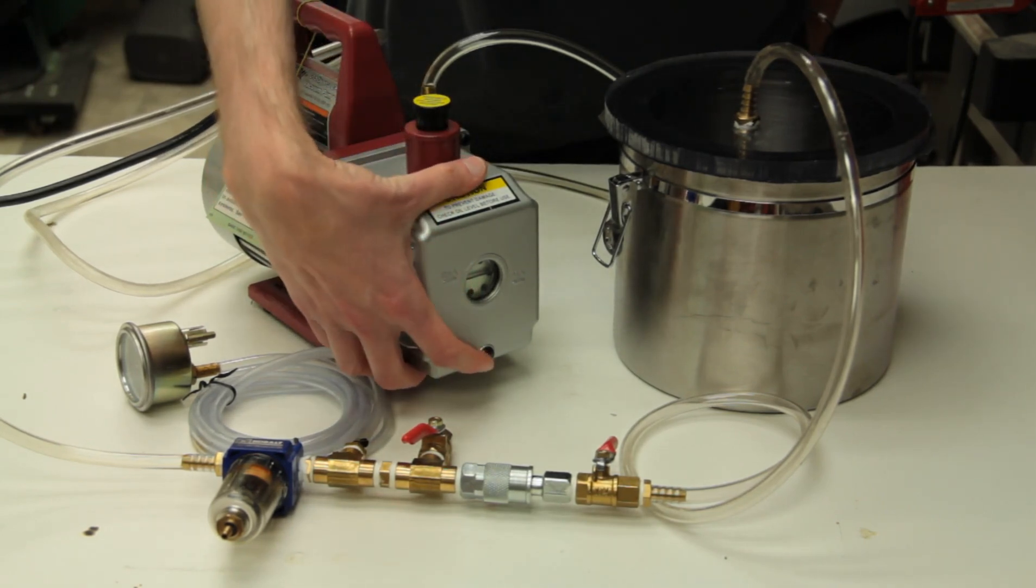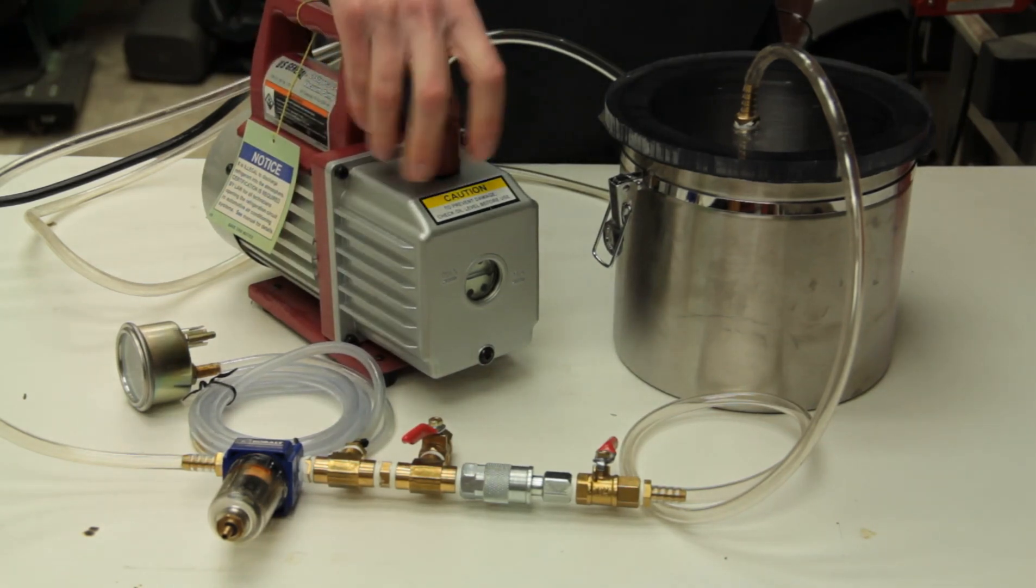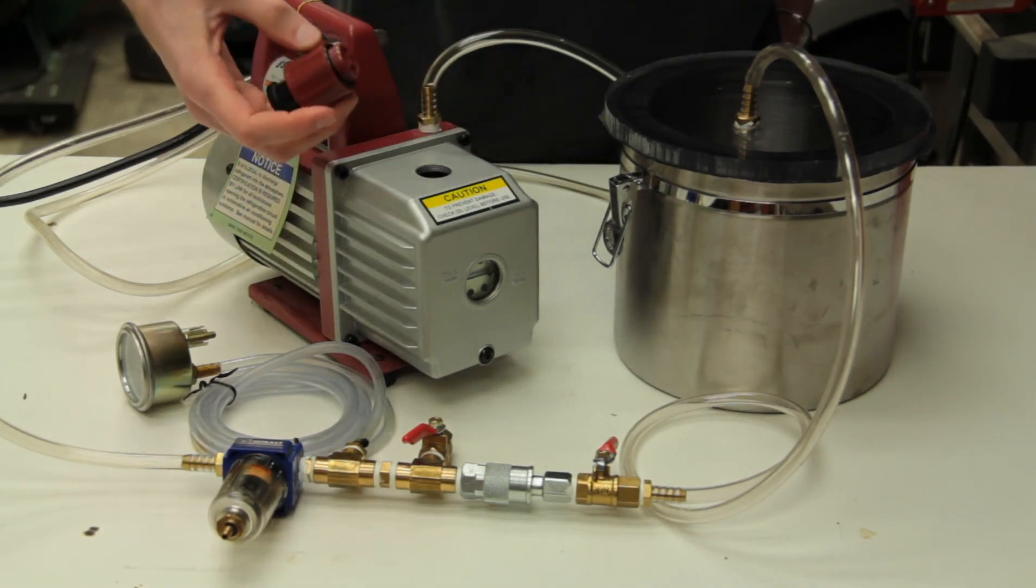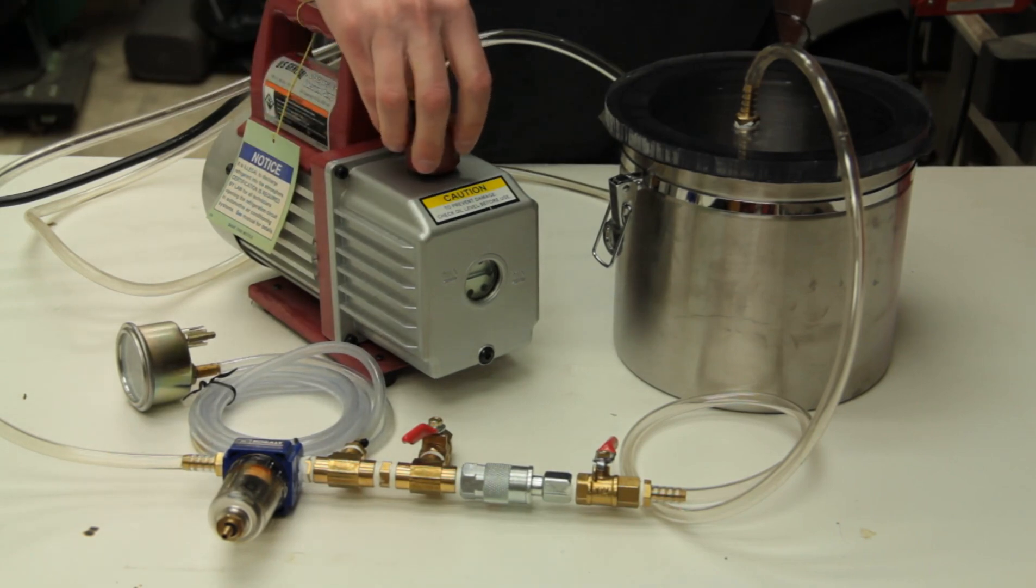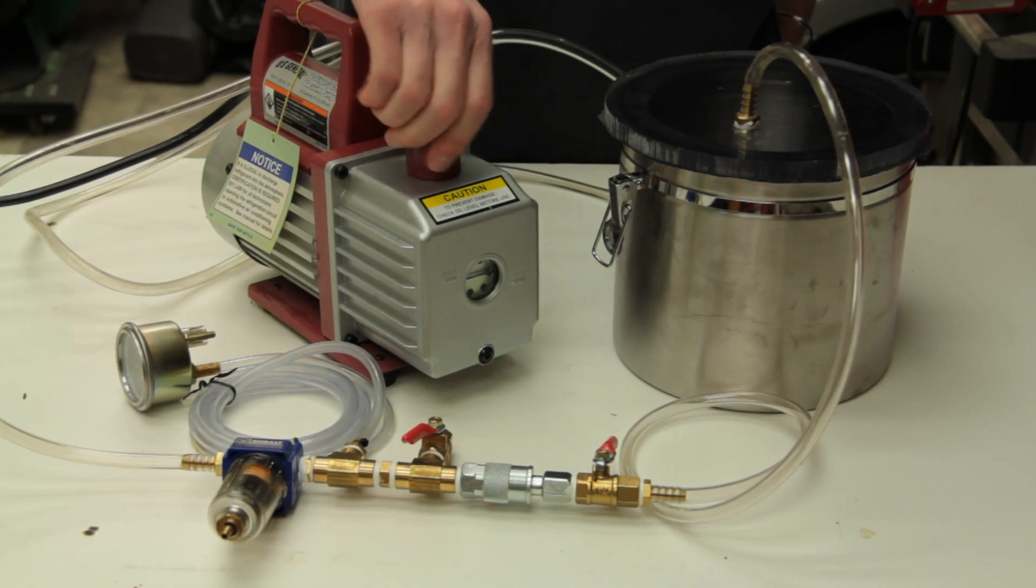This particular pump just has a drain valve here. You would drain it out. And again, on this pump, you would actually take this exhaust port off, and then you would fill the oil here. Your pump may vary, but they all work similarly.